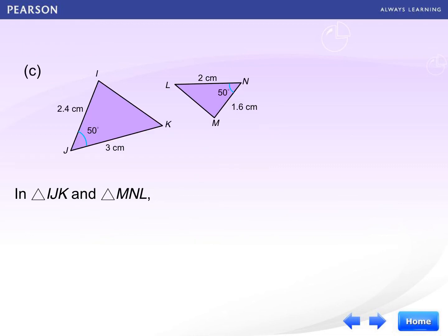Now, look at one more example and try on this. Are they similar? We look at the ratio of IJ and MN. The ratio of a pair of corresponding sides is 2.4 over 1.6, which is equal to 3 over 2. Another pair of corresponding sides are JK and NL. For JK and NL, the ratio is 3 over 2.